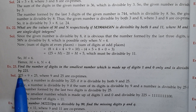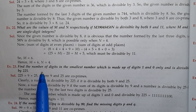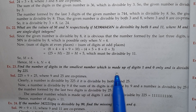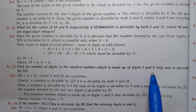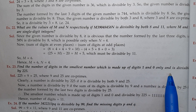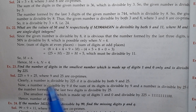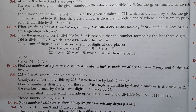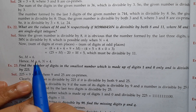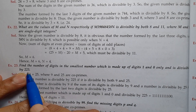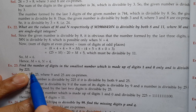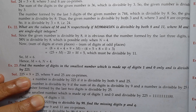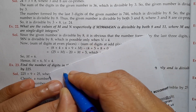Example 23: Find the number of digits in the smallest number which is made up of digits 1 and 0 only and is divisible by 225.